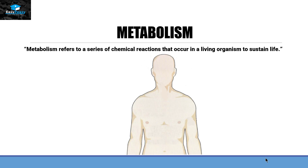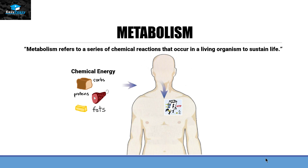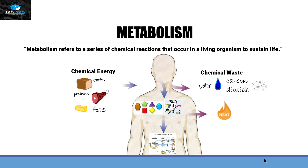There are three different steps in metabolism. The first step is the conversion of food to energy to run the cellular processes. Then this food in small parts will convert itself into building blocks and become part of our proteins, lipids, nucleic acids, and carbohydrates. The rest that is not necessary will get eliminated in the form of carbon dioxide, water, heat, and waste products.